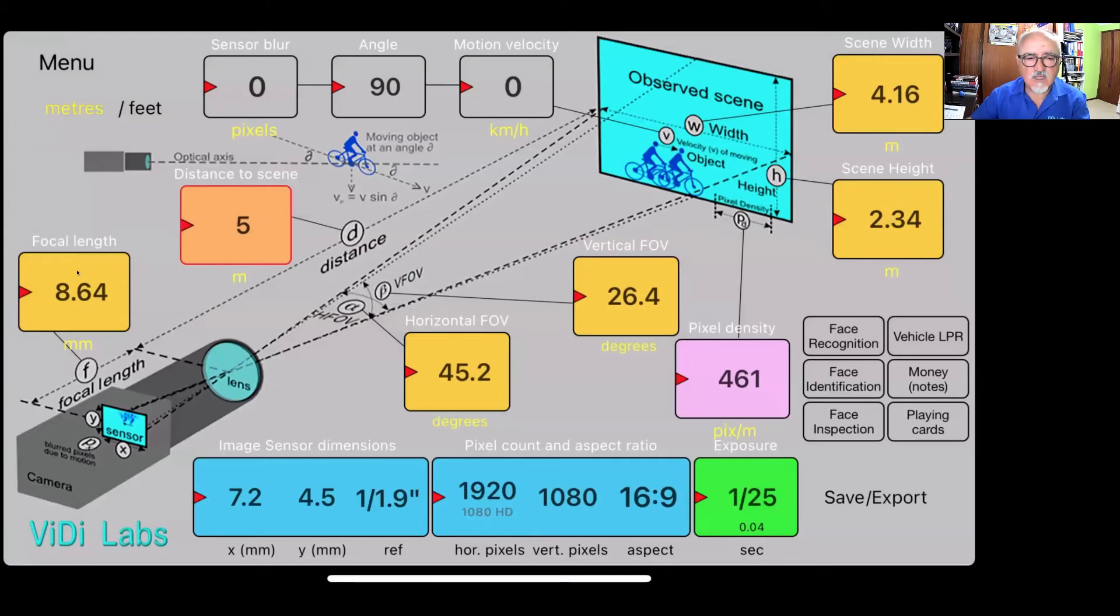This is the actual focal length lens that needs to be set on the camera, which has this sensor with this pixel count in order to achieve face identification recognition by the software. This is not standard recognition as we probably would do another example. So 8.64 is the focal length required.